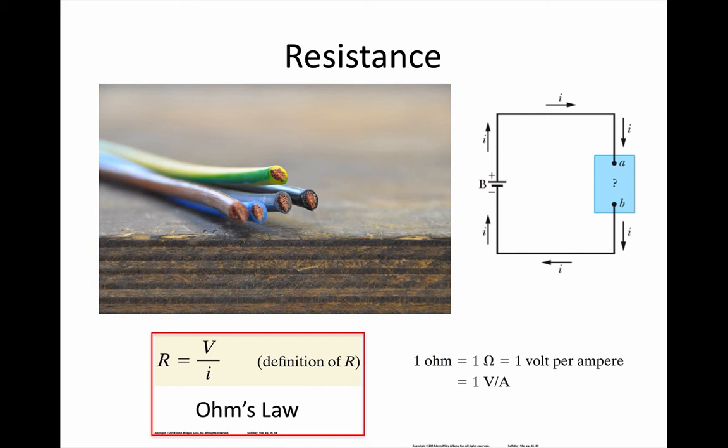We find the resistance of any block of material that we want by applying a potential difference V across it and measuring the current I that results. We use the equation that we know as Ohm's law to calculate the resistance.